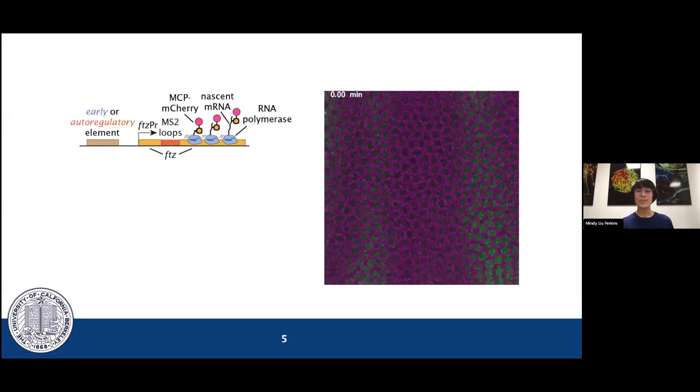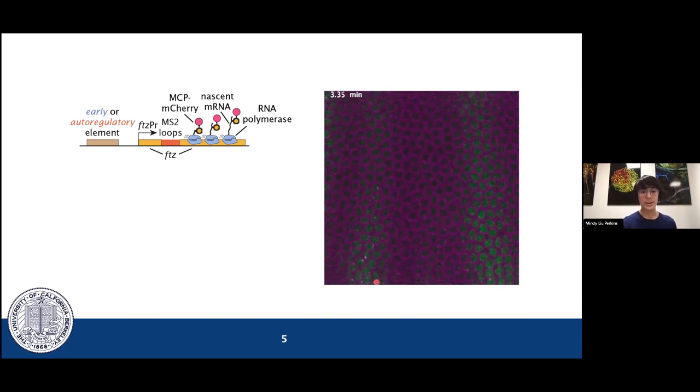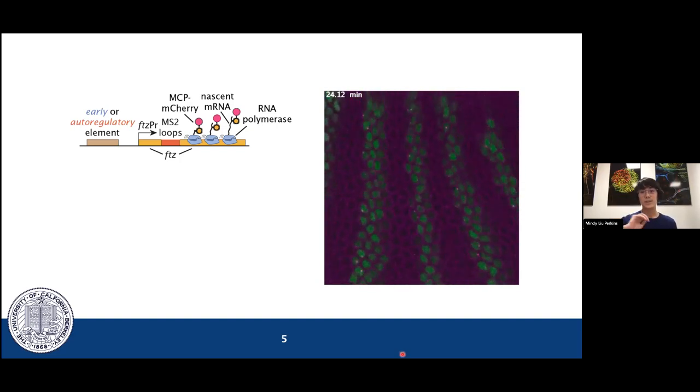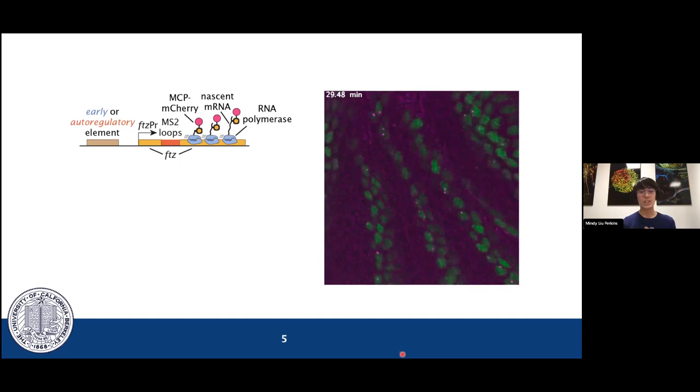We used live imaging techniques to simultaneously monitor the transcription rate with the MS2-MCP system and the protein concentration with LamaTag in real time. Here is a video where these pink spots emerging are all transcription spots where nascent mRNA is appearing. The green is the FUTs protein concentration, and the cells are all becoming fluid here as gastrulation begins.